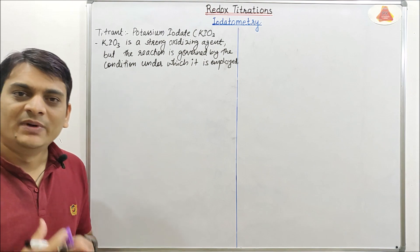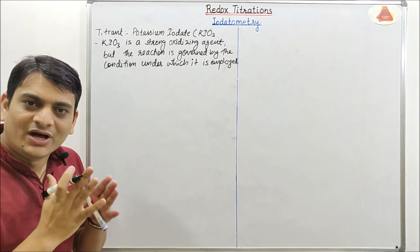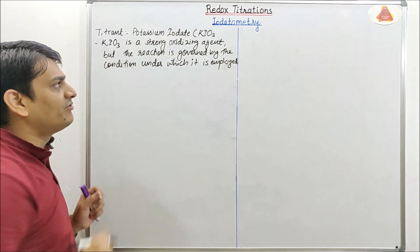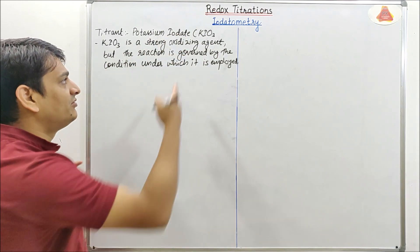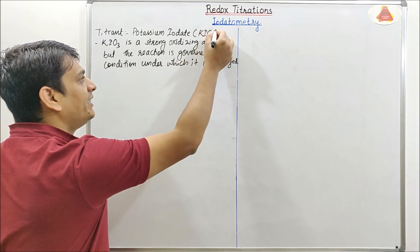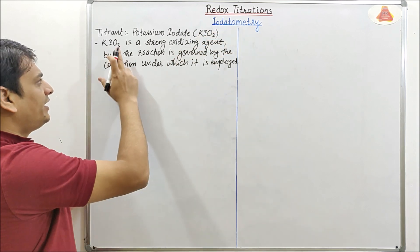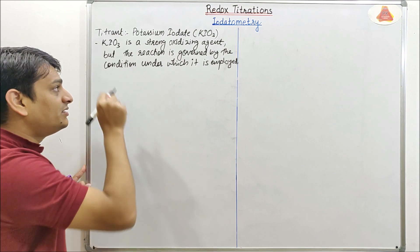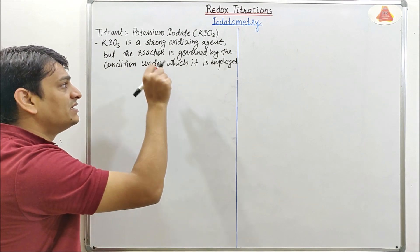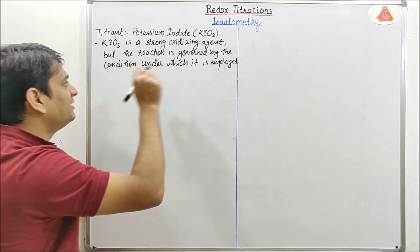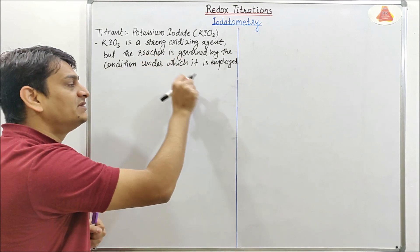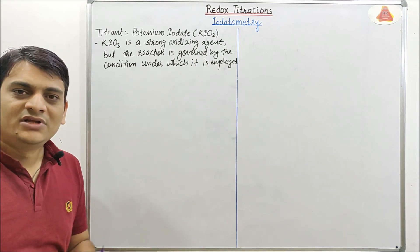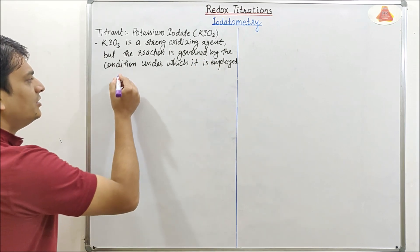In iodatometry, the titrant is potassium iodate, denoted by KIO3. KIO3 is a strong oxidizing agent, but the reaction is governed by the condition under which it is employed. Now coming to the reaction of this potassium iodate.